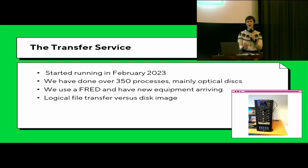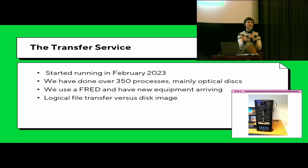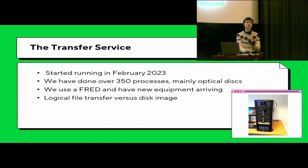The one thing I want to point out is that we mainly do logical file transfers instead of disk images. Logical file transfers is basically copy and pasting the files from whatever digital carrier comes in — it's a bit more complicated than that, but that's basically what it comes down to. A disk image, as most of you will know, is a bit-by-bit copy of that specific disk or digital carrier. We've mainly gone for this approach because the digital carrier itself is not of as much importance — it's just seen as a carrier for that specific content.